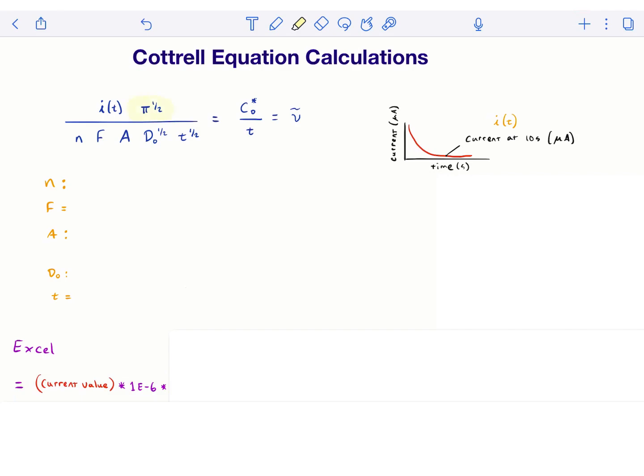And then pi is everybody's favorite, pi. This is the square root of pi, so in Excel you'll say 3.14159, that's enough digits for now, to the exponent of 0.5.